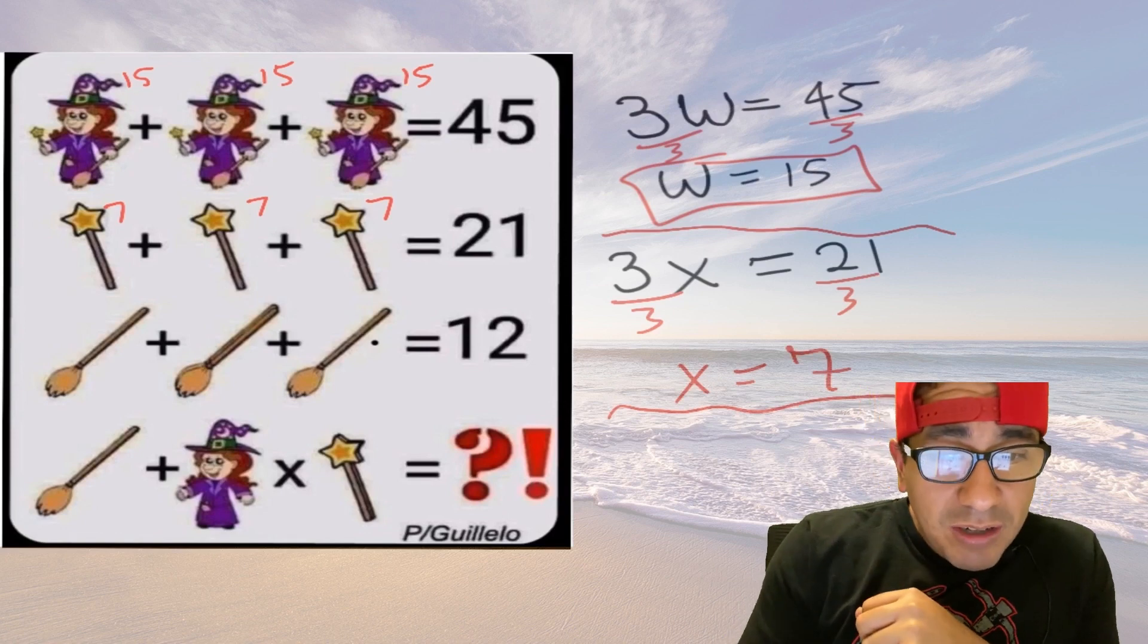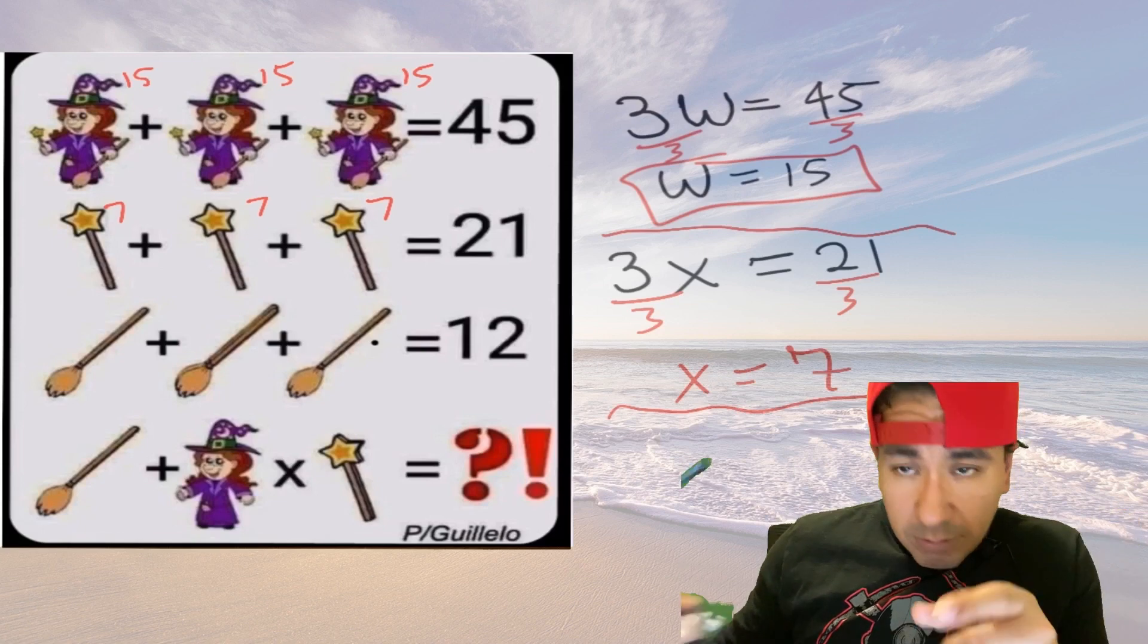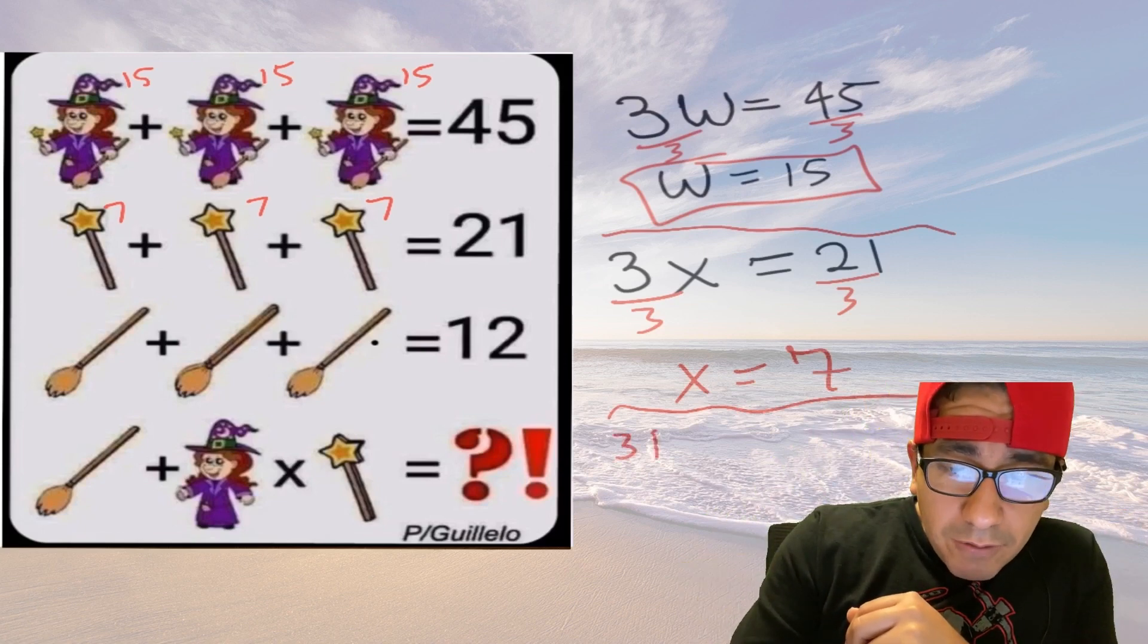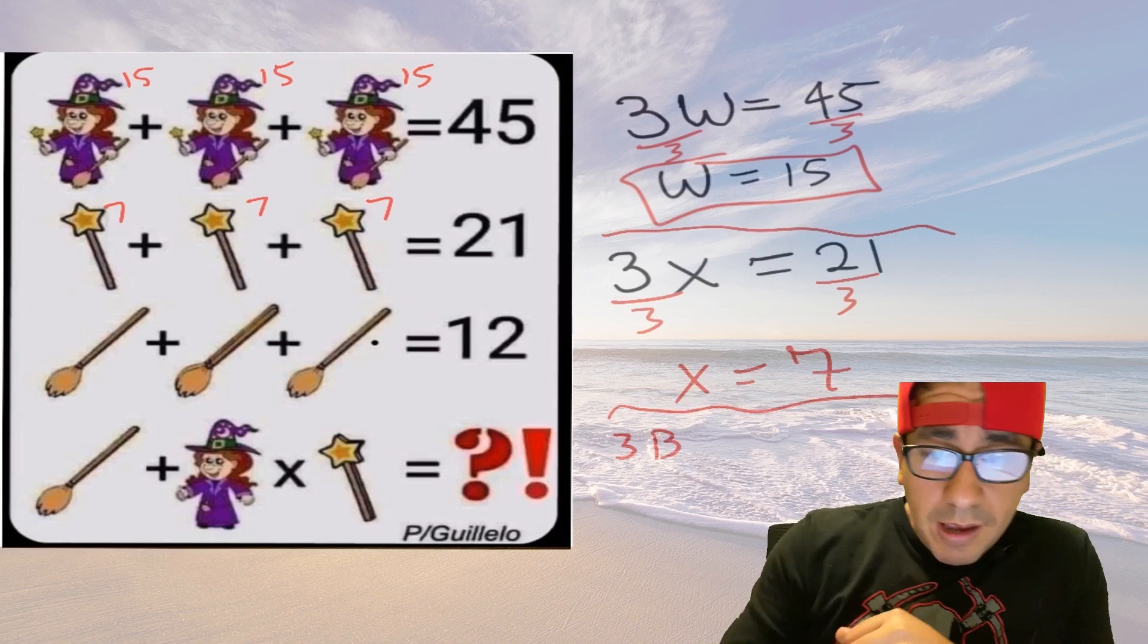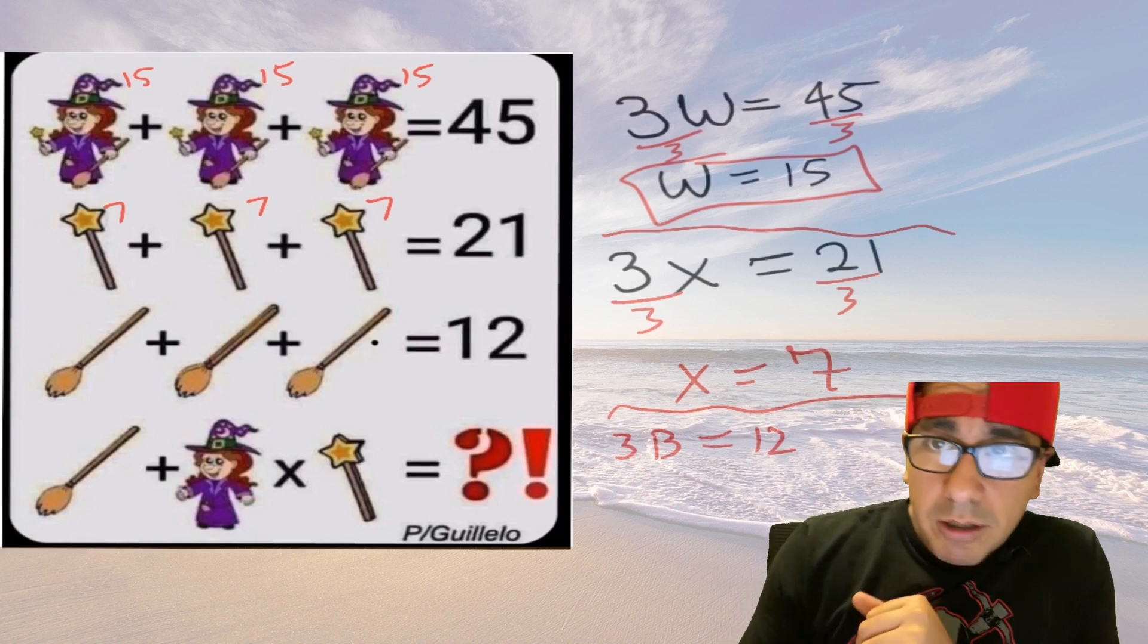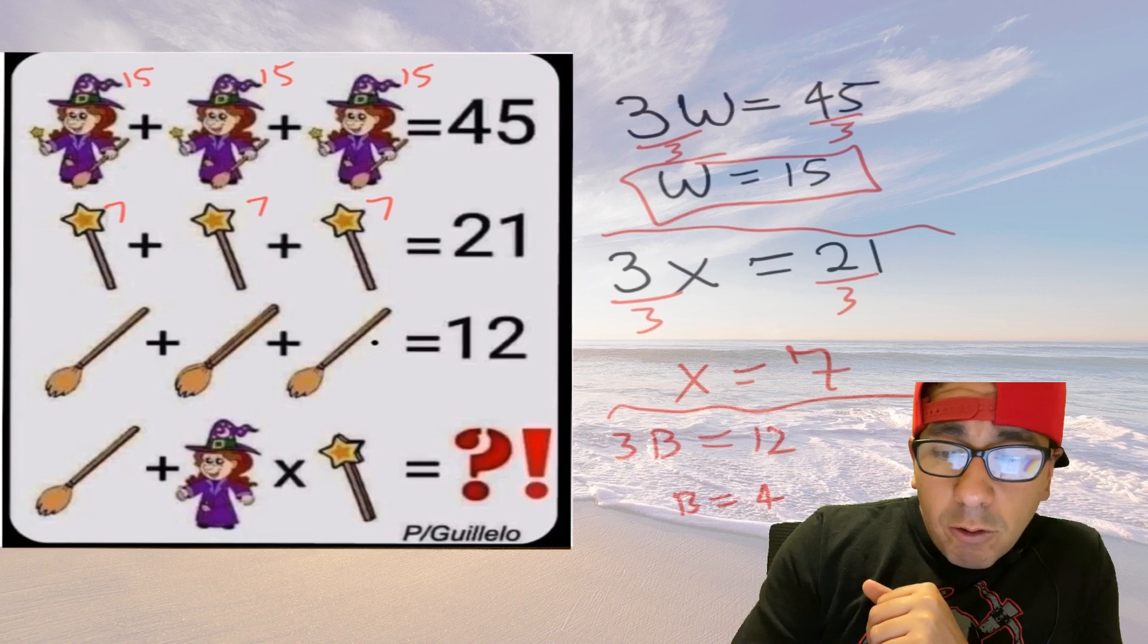So now we have three brooms, again no glasses. Three brooms, so we'll say three B for brooms equals twelve. So three times one number equals twelve, well we know B has to be four.